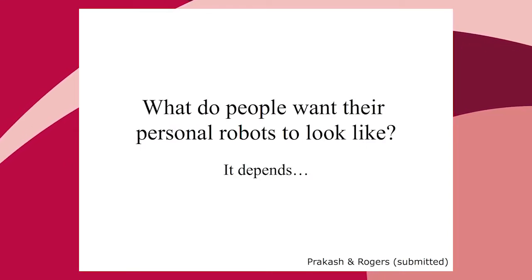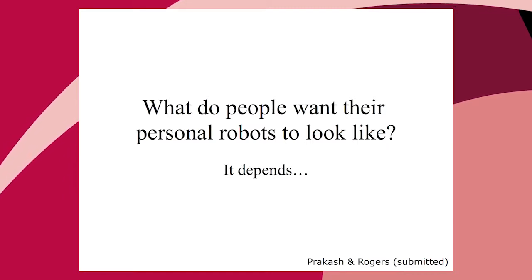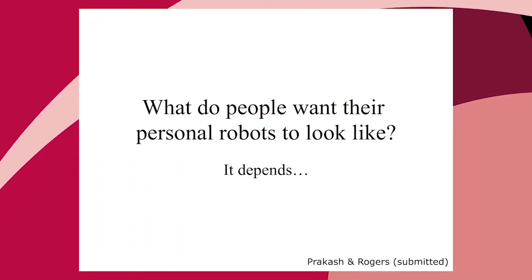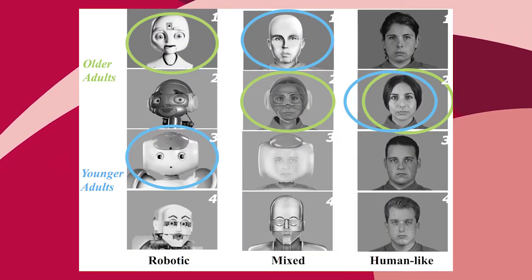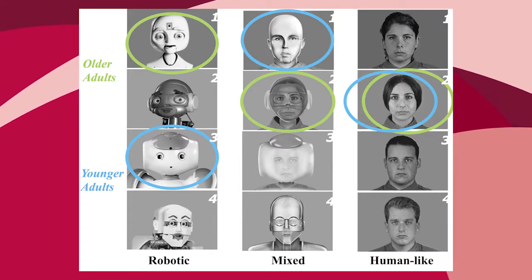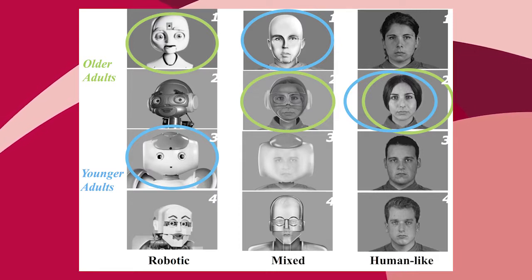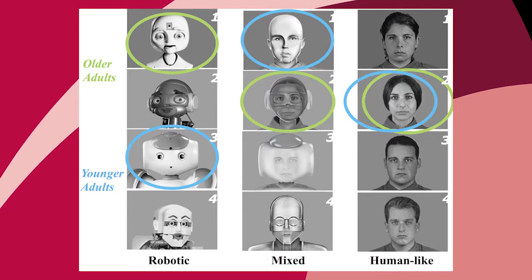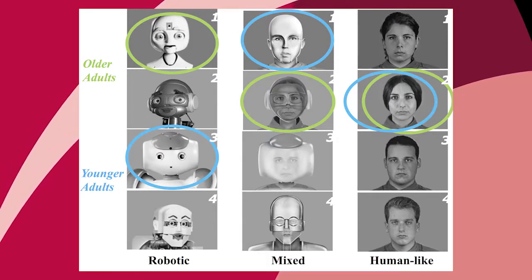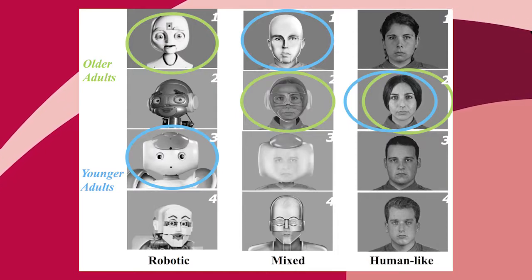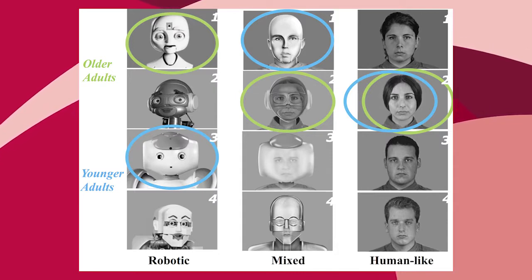What do people want their personal robots to look like? This is important because the appearance of a robot influences trust, reliance, and willingness to use it. We showed people different robot appearances and asked what they'd want at home. Younger adults chose robot number three; older adults chose robot number one — already showing a difference. We also showed human-like faces and morphed faces, revealing further preference variations by age group.